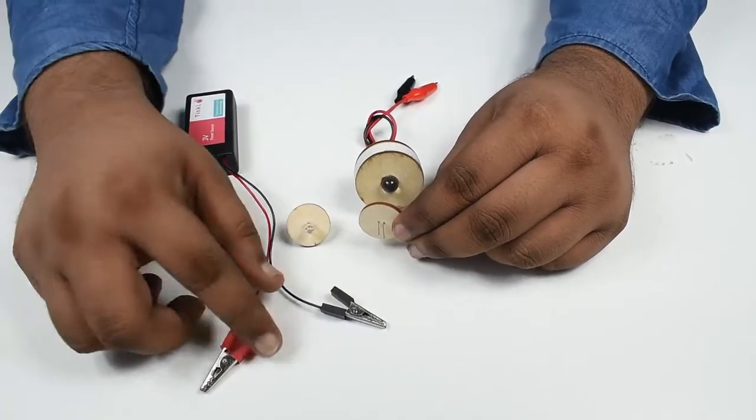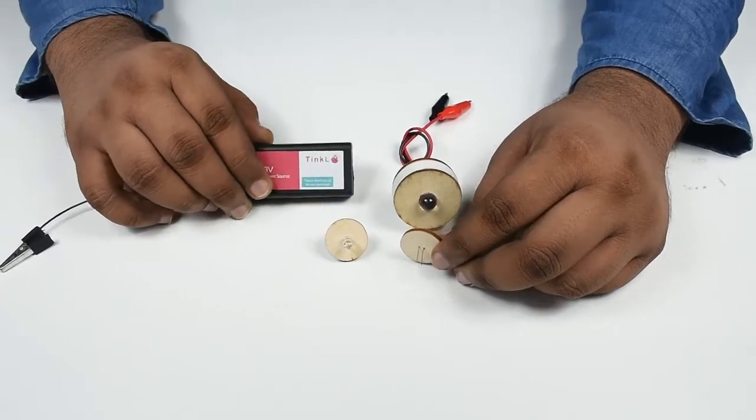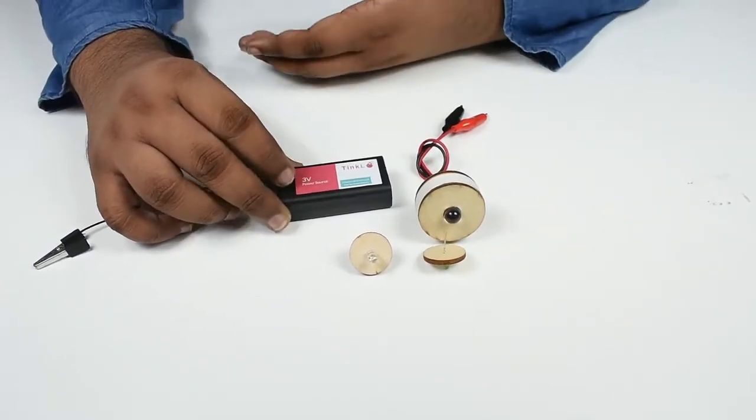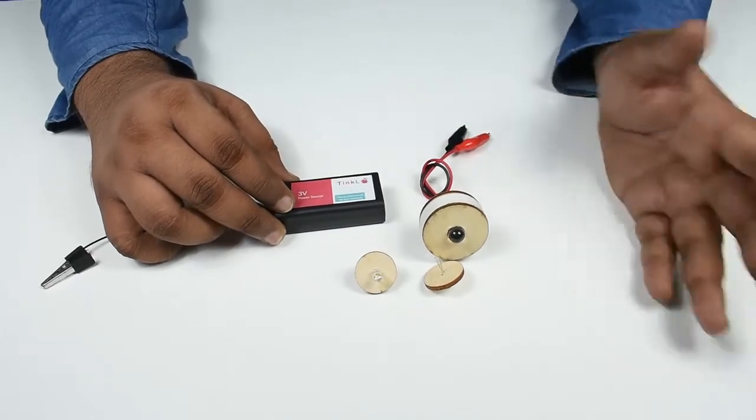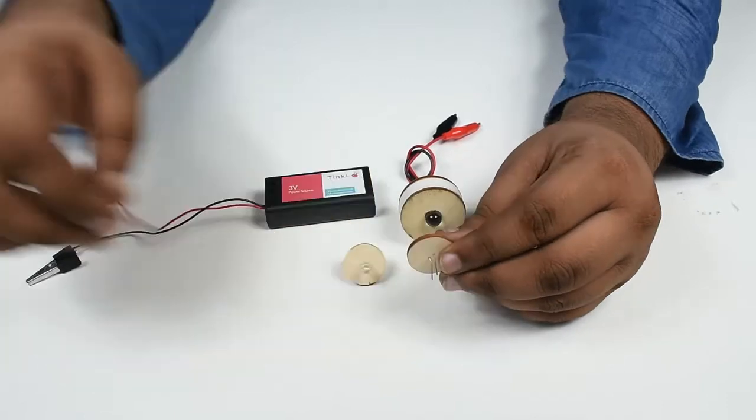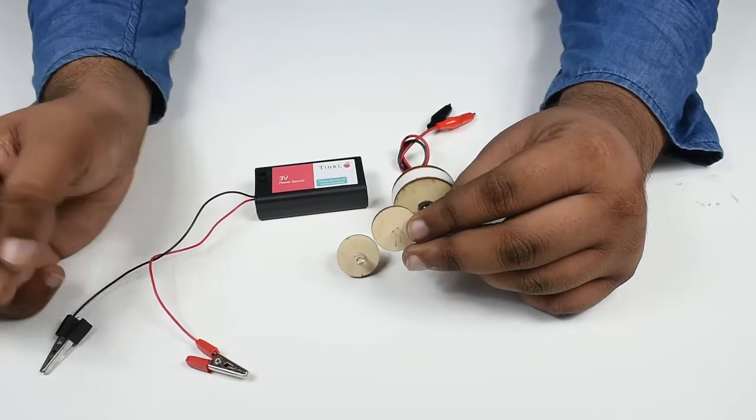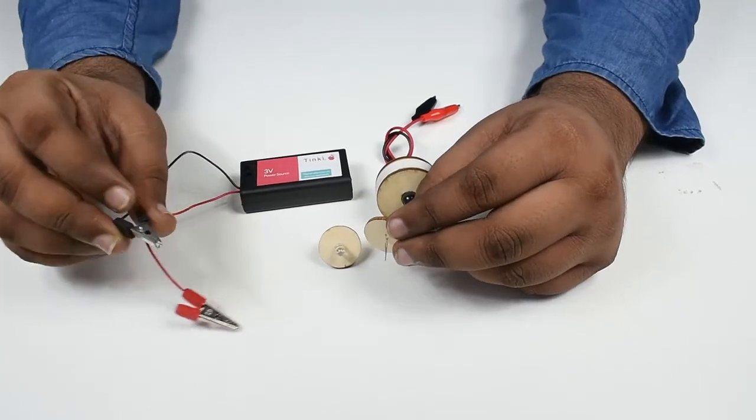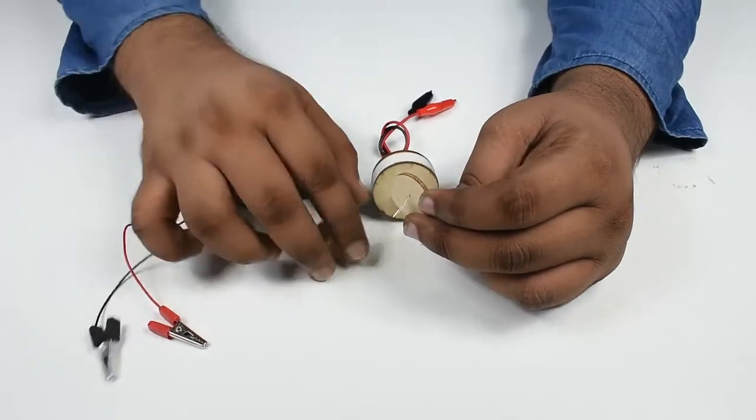You have to connect only the three volt battery, as if you connect any other higher volt battery, the LED will not work and it will burn away. To make this work, we have to connect the positive, that is the red wire, to the longer terminal and the negative or the black wire to the shorter negative terminal.